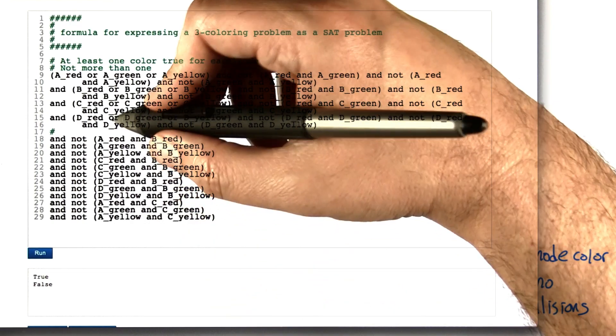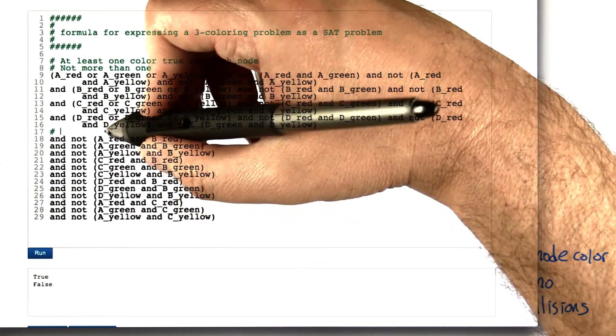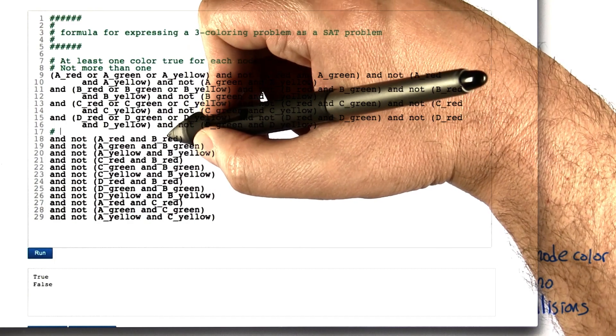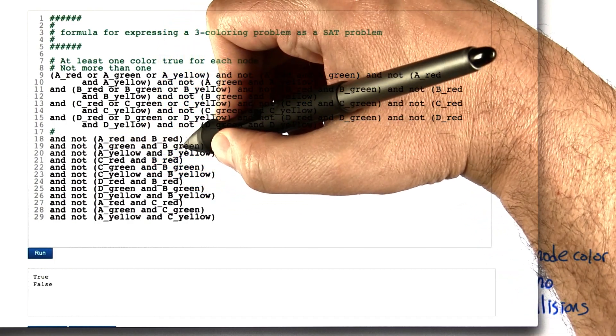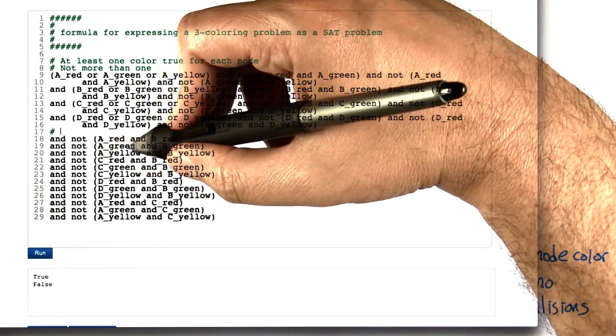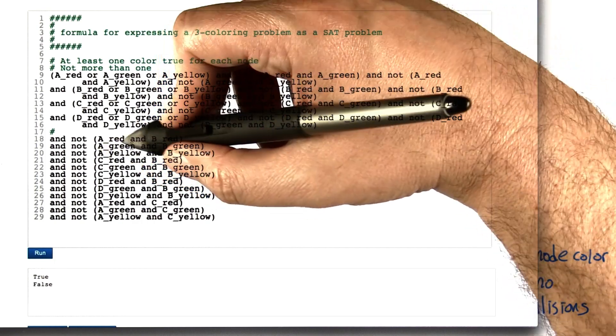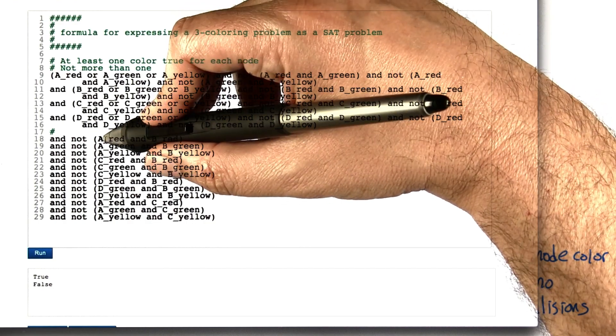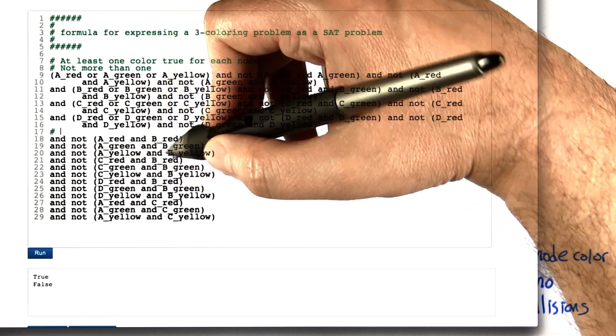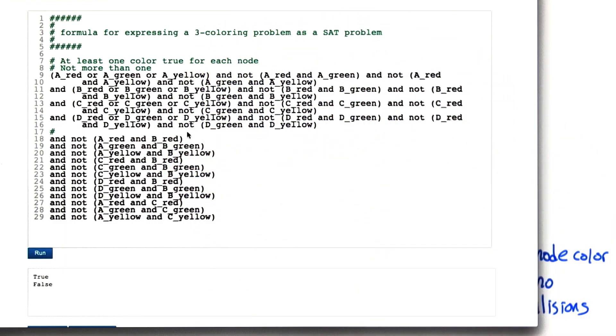Then we have some additional clauses that say, well it can't be the case that A is red and B is red at the same time. It can't be the case that A is green and B is green at the same time. And it can't be the case that A is yellow and B is yellow at the same time. What is that saying? That's saying that the color, whatever the color happens to be for A, it can't match the color of B. And that's because they share an edge in the graph.